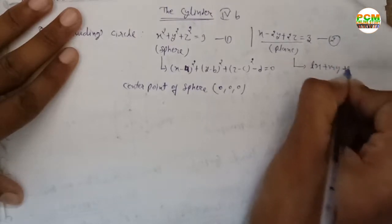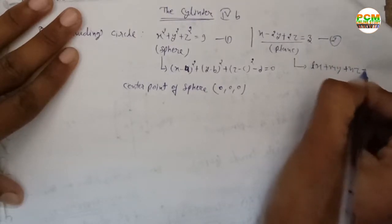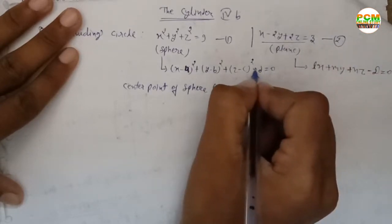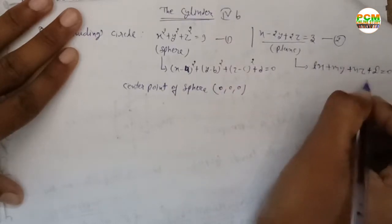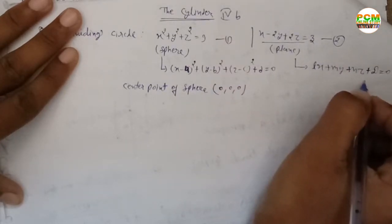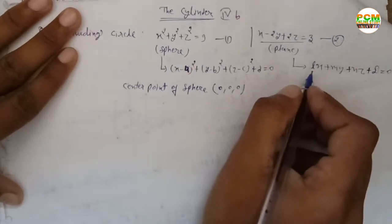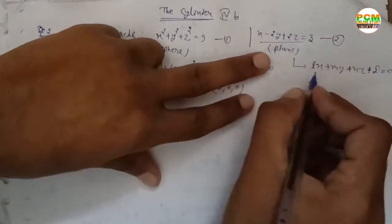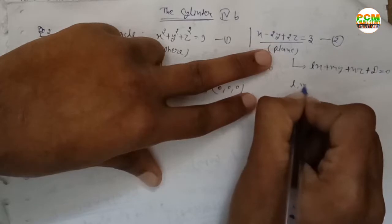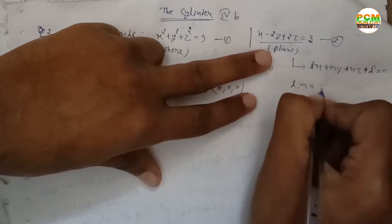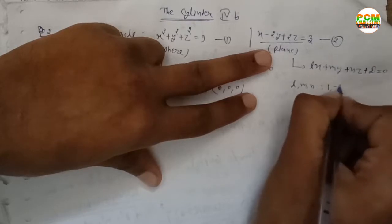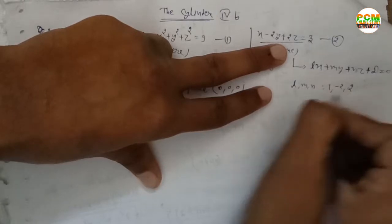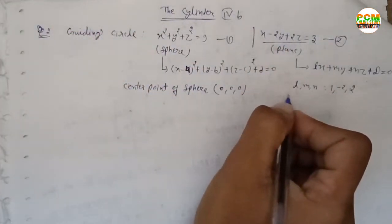The second equation x - 2y + 2z = 3 is the equation of a plane. Comparing with lx + my + nz + d = 0, we get the values of l, m, n as 1, -2, and 2 respectively, and d = -3.